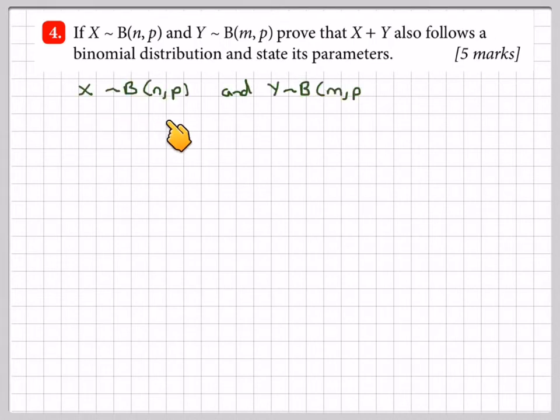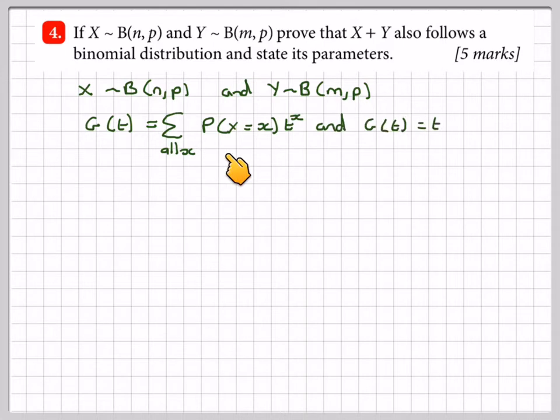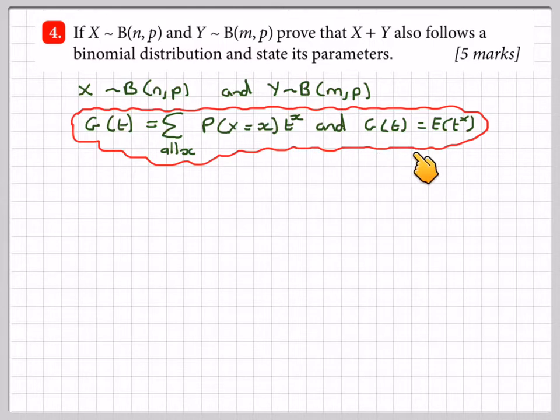If X is binomial n,p and Y is binomial m,p, the generating function is the sum over all x of the probability of x equals x times t to the x, and G of t equals E of t to the x.